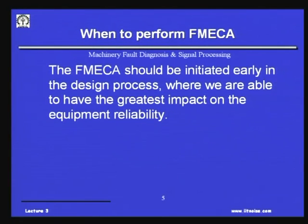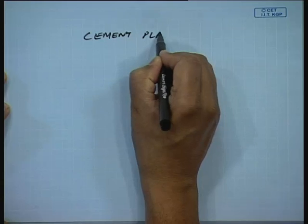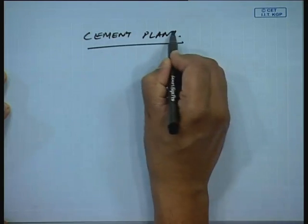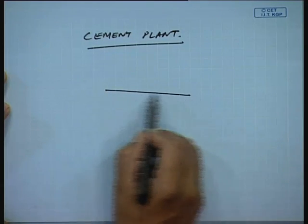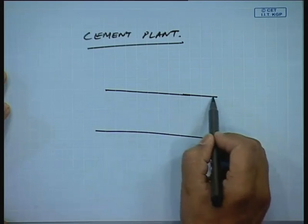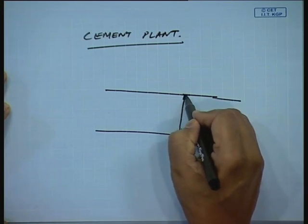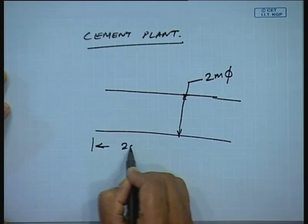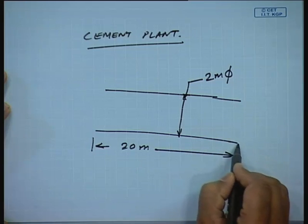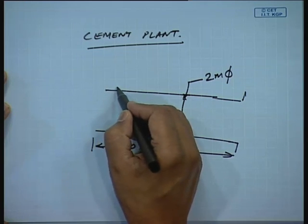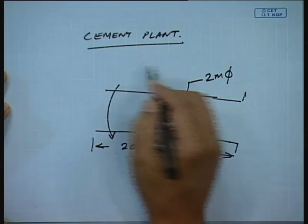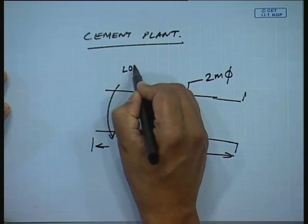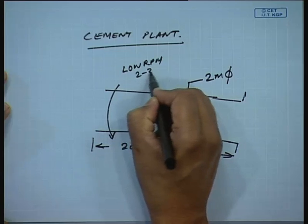For example, let us take the case of a cement plant. In a cement plant, there is a large rotary kiln — the diameter could be about 2 meters and it could be about 20 meters long. This kiln rotates at a very low RPM of the order of 2 to 3 RPM, while the motor rotates at about 1440 RPM.